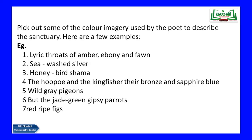Pick out some of the colour imagery used by the poet to describe the sanctuary. Examples include: lyric throats of amber, ebony and fawn; sea-washed silver. Others: the hoopoe and the kingfisher are bronze and sapphire blue; wild grey pigeons — grey; but the jade green gypsy parrots — jade green; and red ripe figs — the figs are red and ripe. These are the colour images Sarojini Naidu uses throughout the poem.